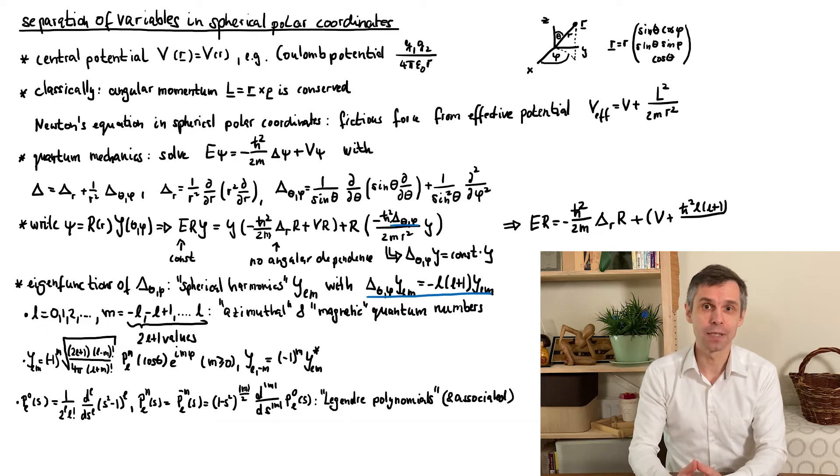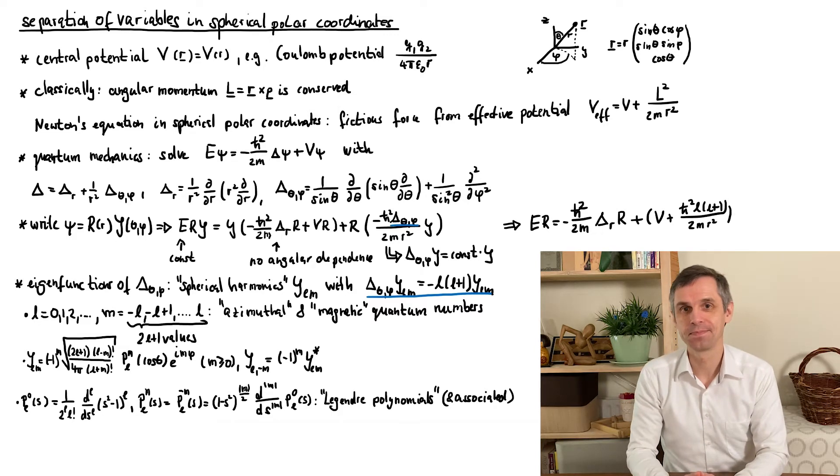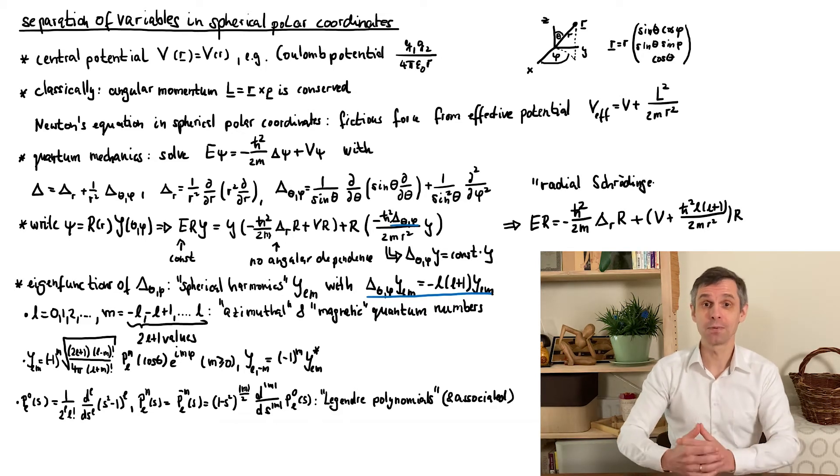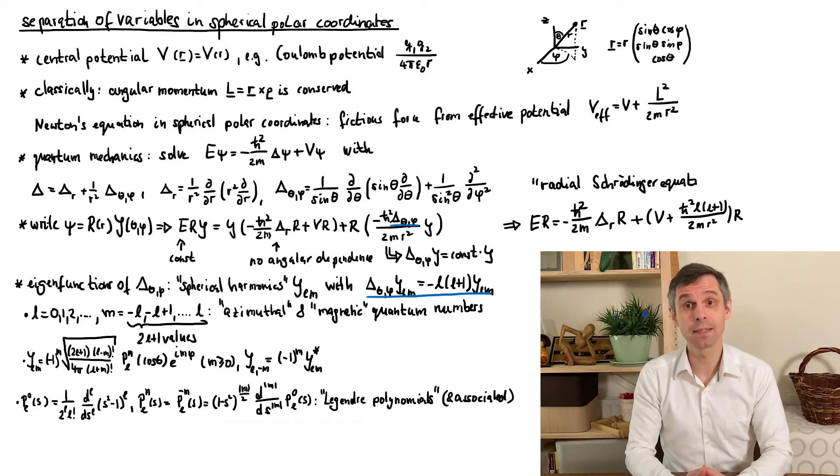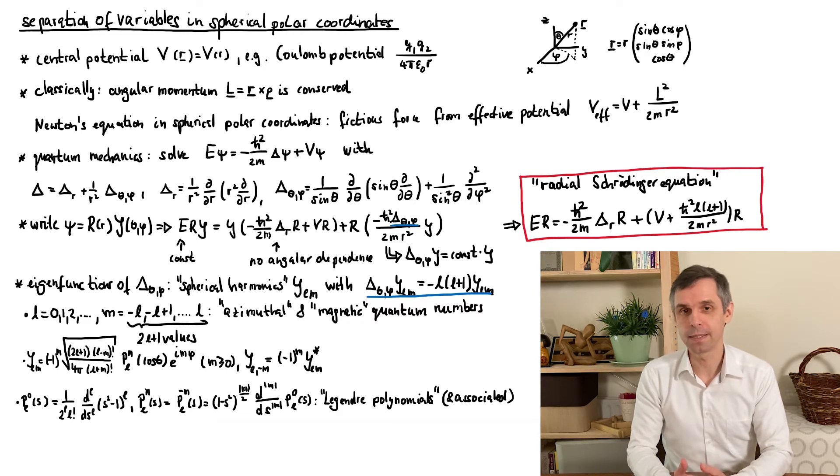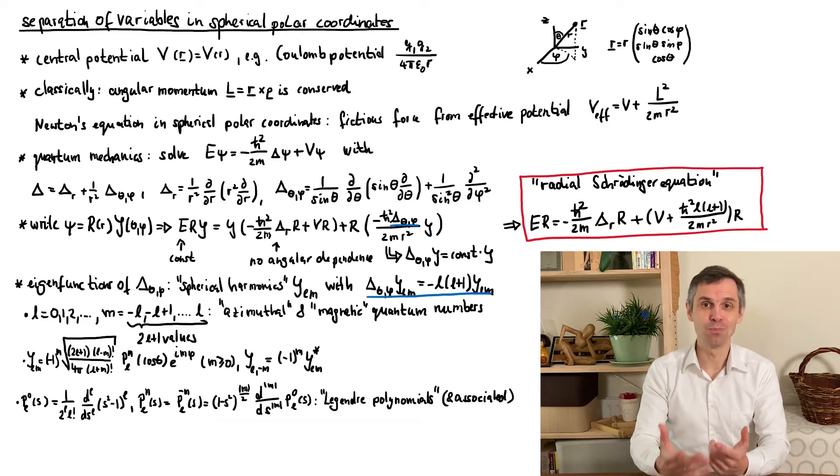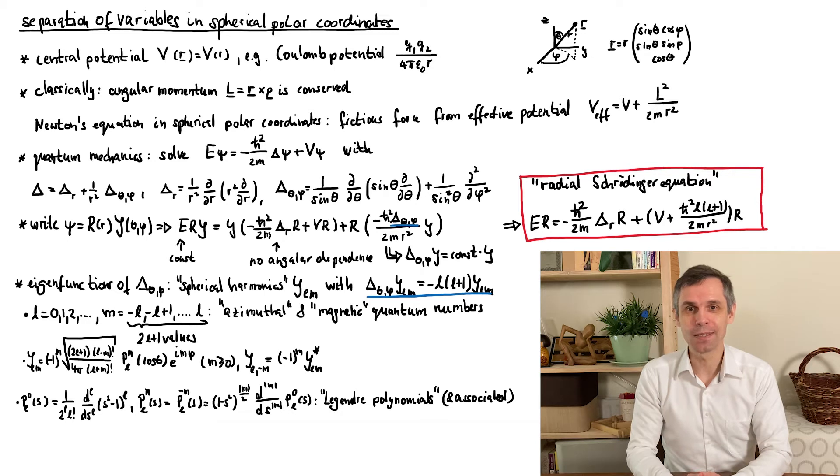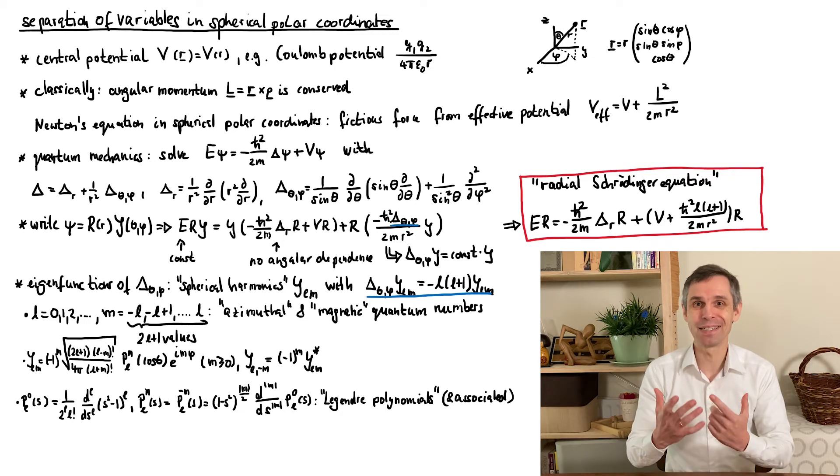This is the radial Schrödinger equation given here. This differs from the Schrödinger equation for a one-dimensional point particle in two ways. In the derivatives, in the radial Laplace operator, which are a bit more complicated, and arguably much more interestingly, also in the potential energy, which has picked up an extra term.